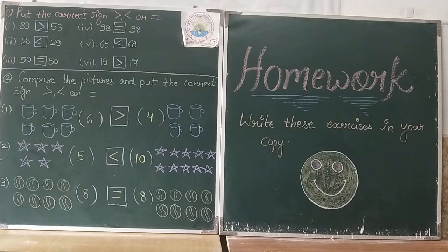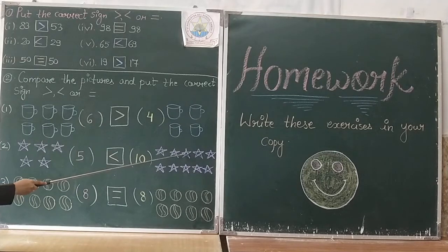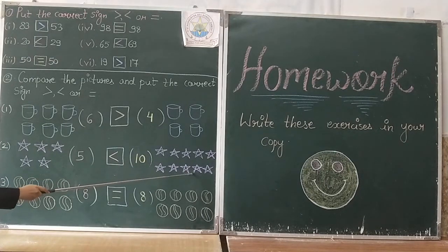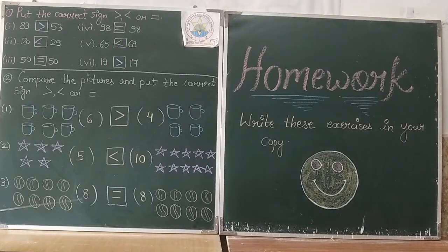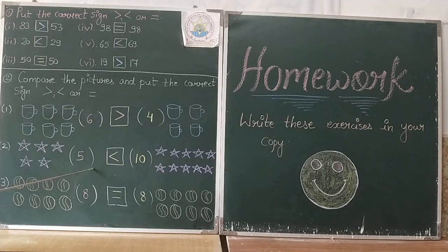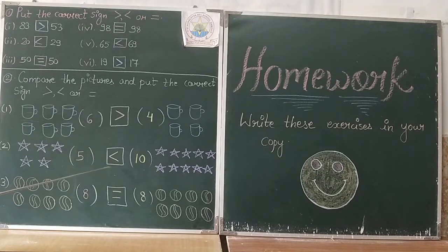Question number 2: one side has 5 stars, and on the other side we have 10 stars. यहाँ पर कितने stars हैं? 10. So 5 is smaller than 10. 5 number जो है वो small है 10 से, तो यहाँ पर closed mouth आजाएगा 5 की तरफ and open mouth 10 की तरफ।